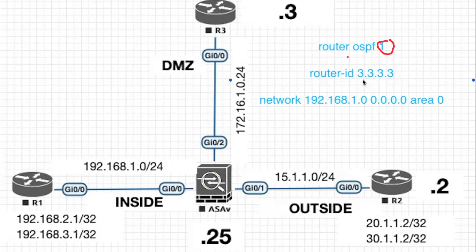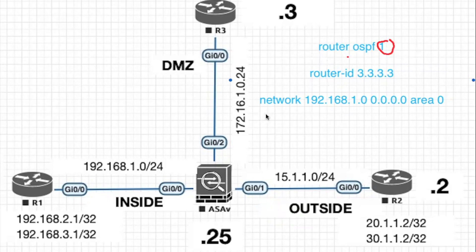The next command is the network statement. The first command 'router ospf process-id' initializes the OSPF process, but the network statement identifies the interfaces that the OSPF process will use. It also identifies the area that those interfaces participate in. The syntax is: network, IP address, wildcard mask, area, area-number.